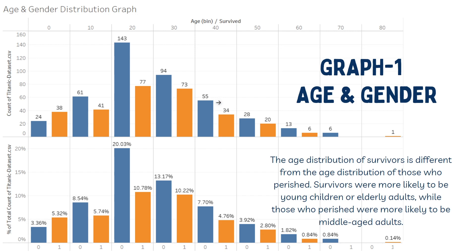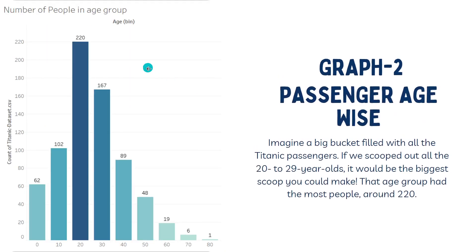Overall, the graph shows there were many more male passengers on the Titanic than female passengers, but a higher proportion of female passengers survived than male passengers. This is likely due to the protocol that was followed — women and children were given priority when boarding the lifeboats. The age distribution of survivors also differs from those who perished, with survivors more likely to be young children or elderly adults.